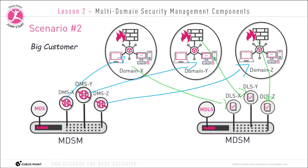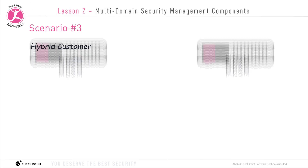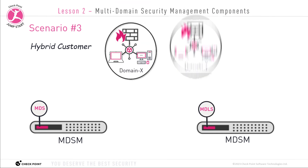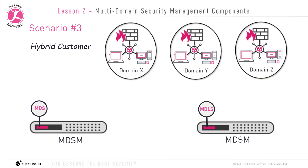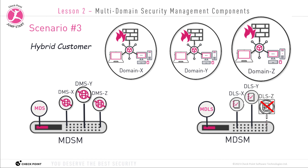Scenario three is a hybrid scenario. We still have two appliances — one MDS and one multi-domain log server — and three domains: domain X, domain Y, and domain Z. On the MDS server, we have three DMSs: DMS-X, DMS-Y, and DMS-Z. On the MDLS server, however, we create only two domain log servers — DLS-X and DLS-Y. Customer Z did not want to pay for a separate container on the MDLS server — perhaps to save cost or fit within their budget — so they opted out of having a dedicated DLS on the MDLS server.